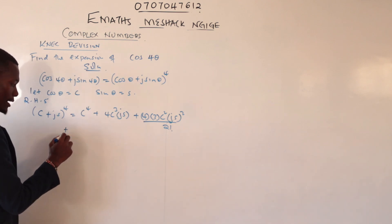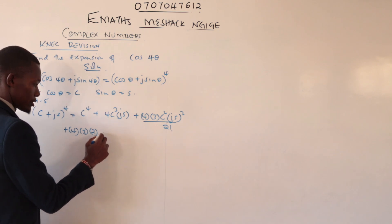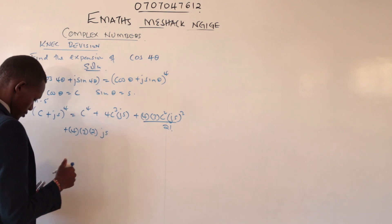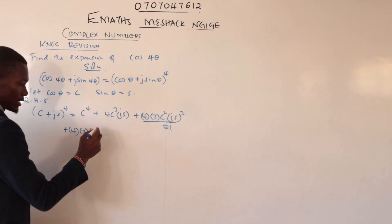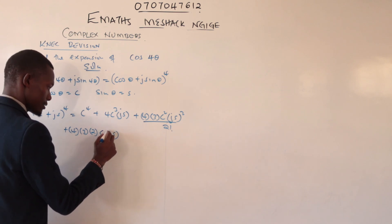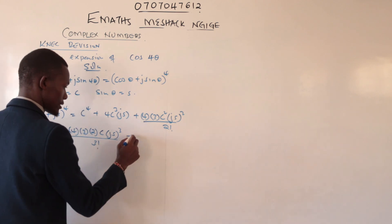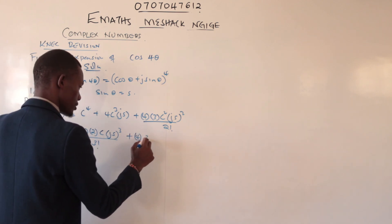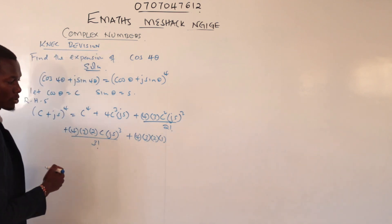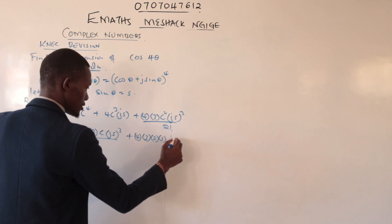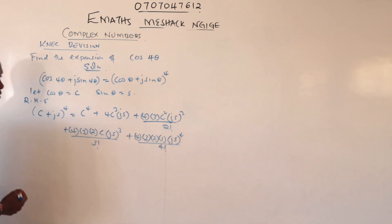The next term is plus 4 times 3, drop 2, then c times (js) cubed, all over 3 factorial. The last term is 4 times 3 times 2 times 1, with c to the power 0 — which is 1 — so (js) to the power 4, all over 4 factorial.